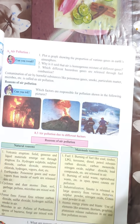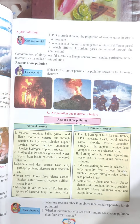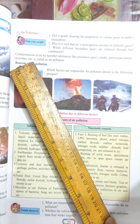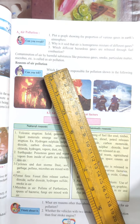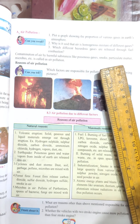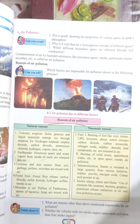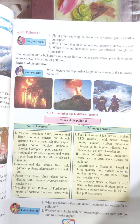In this video we'll study about air pollution. The definition of air pollution: contamination of air by harmful substances like poisonous gases, smoke, particulate matter, and microbes is called air pollution. The air quality is decreased by mixing of harmful substances like carbon monoxide, smoke, particulate matter, microbes, etc.